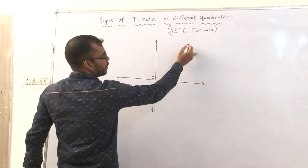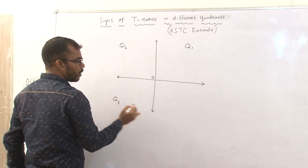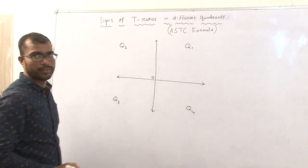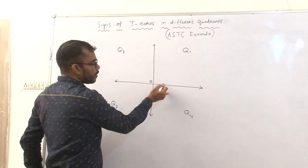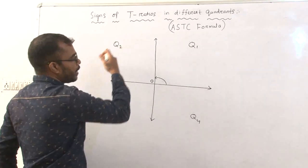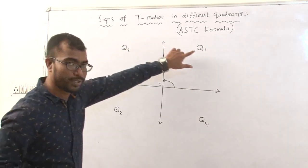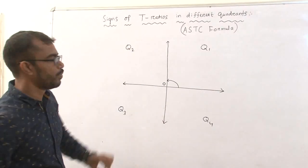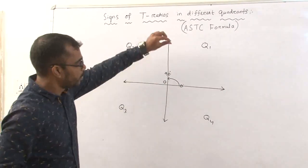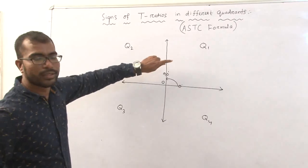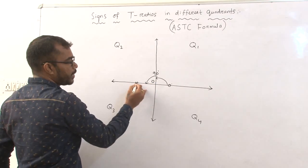As you know, this is the first quadrant, this is the second quadrant, this is the third quadrant, and this is the fourth quadrant. We number them in the anti-clockwise direction. Q1 is the first quadrant, Q2, Q3, and Q4. Q1 lies from 0° to 90°, and Q2 lies from 90° to 180°.